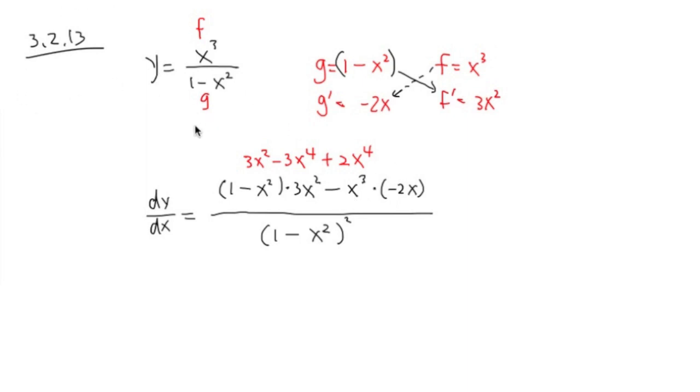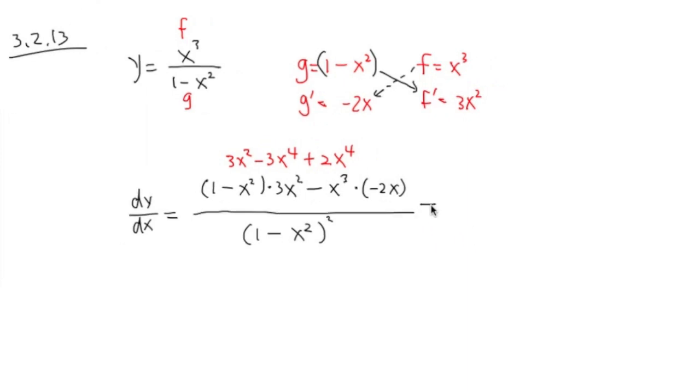And finally, we see that we can combine items here and here. So we are almost done. So this is equal to, let me get the denominator first. The denominator stays the same, 1 minus x squared, and then square. And here I have 3x squared, nothing changed. But the negative 3x to the fourth power plus 2x to the fourth power is the same as minus x to the fourth power. And this is pretty much it.